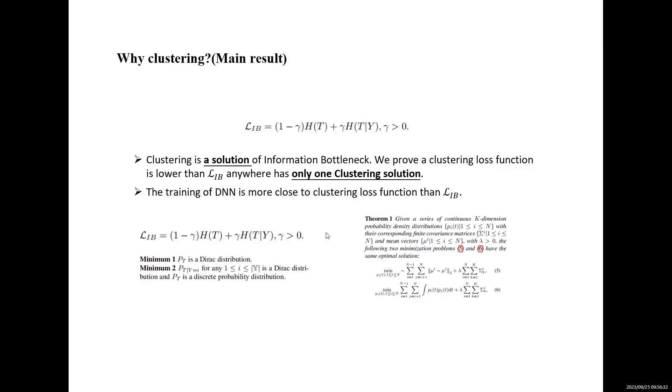The main result is we theoretically find that this clustering manner is the solution of the existing information bottleneck function. By constructing a clustering-related loss function, we prove that the clustering-related function is lower than the information bottleneck function anywhere, and has only one clustering solution.